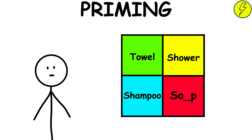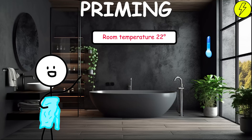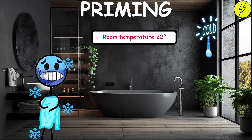Priming effect. The priming effect occurs when exposure to one stimulus influences the response to another subsequent stimulus, even if the two stimuli are not directly related. For example, if people read words associated with cold, they may perceive a room as colder even if the actual temperature is the same.